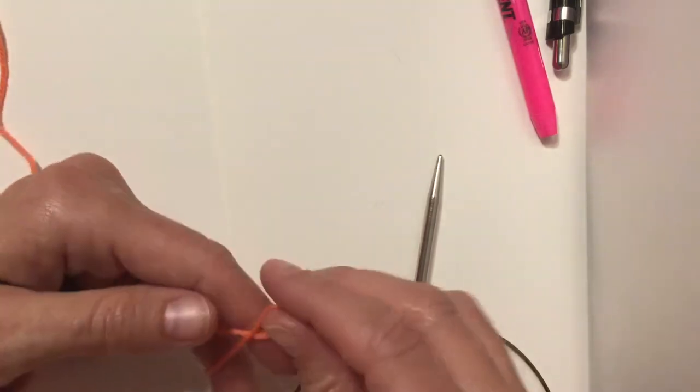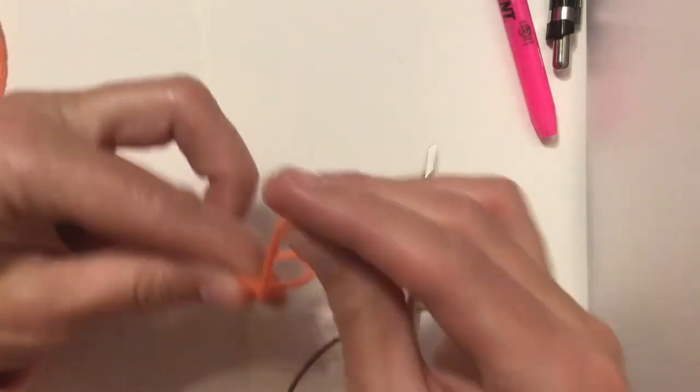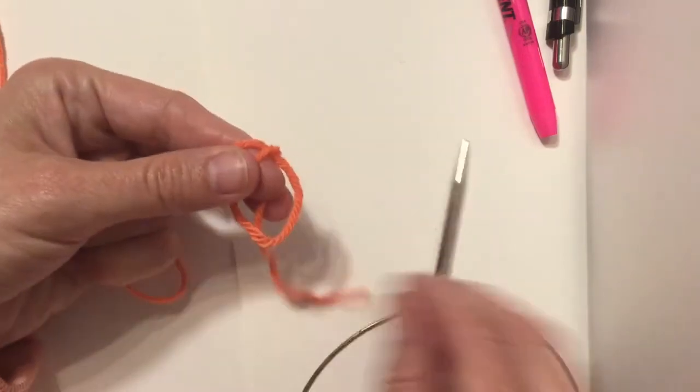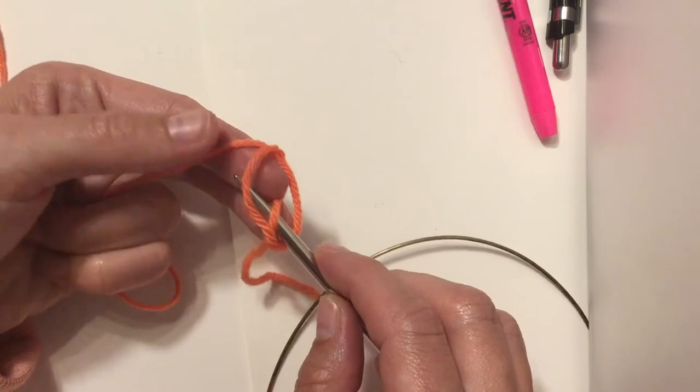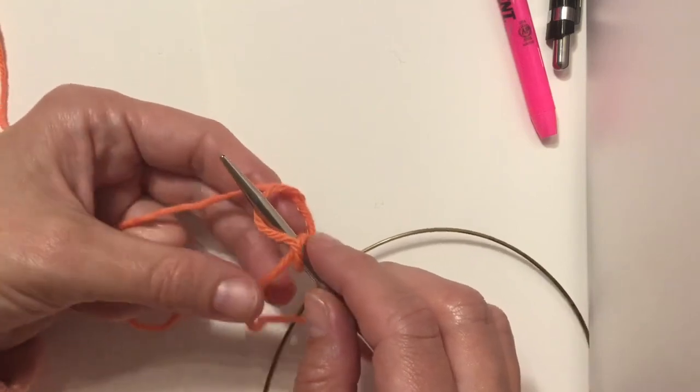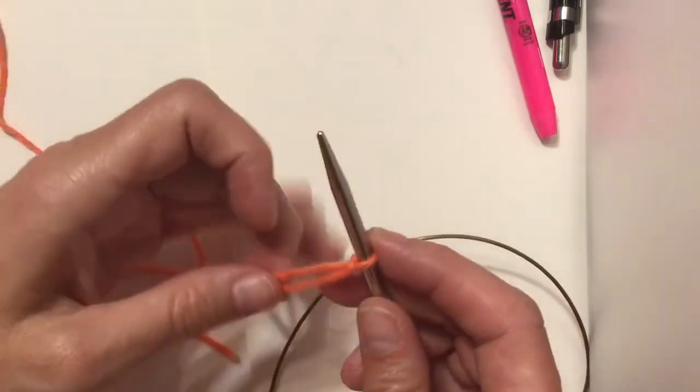So how I make my slipknot is I wrap it around my two fingers, I put the yarn to the back, and then I take my needle and I pick up that yarn that was in the back, put it on top of that circle that you just made, and pull it. That's how I make my slipknot.